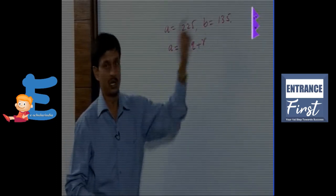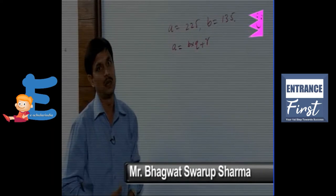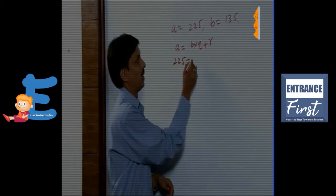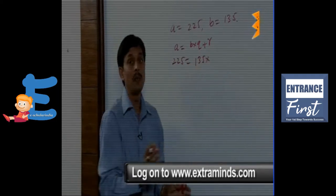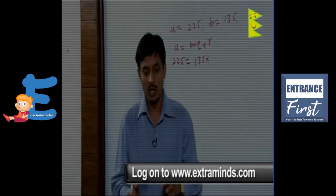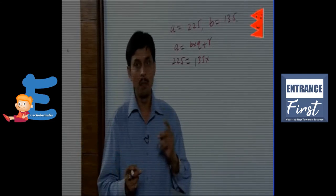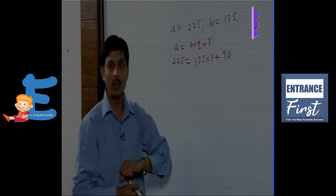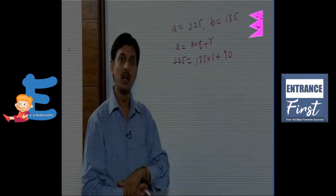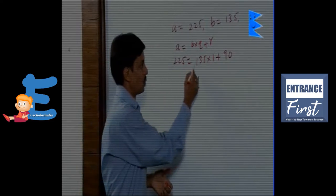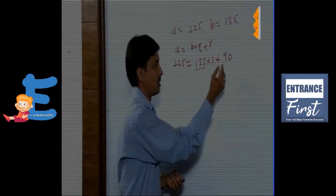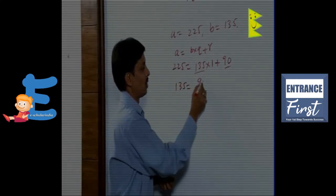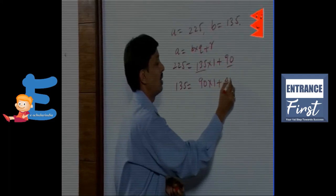To convert these two numbers 225 and 135 into this form, we write: 225 equals 135 into 1 plus 90, because when 225 is divided by 135, the quotient is 1 and the remainder is 90. For the next step, 135 becomes A and 90 becomes B. So we write: 135 equals 90 into 1 plus 45.